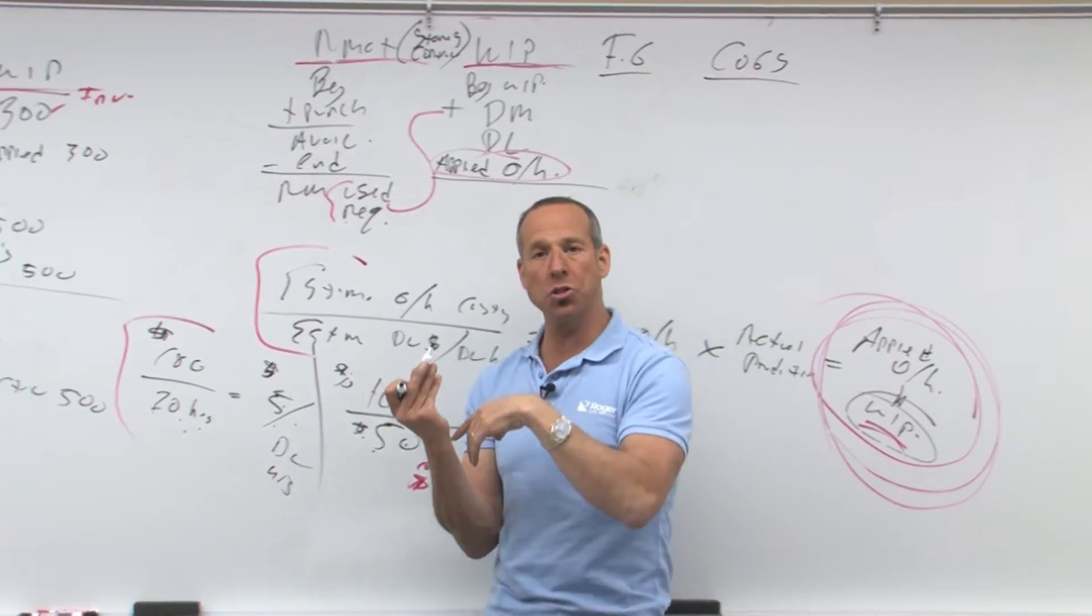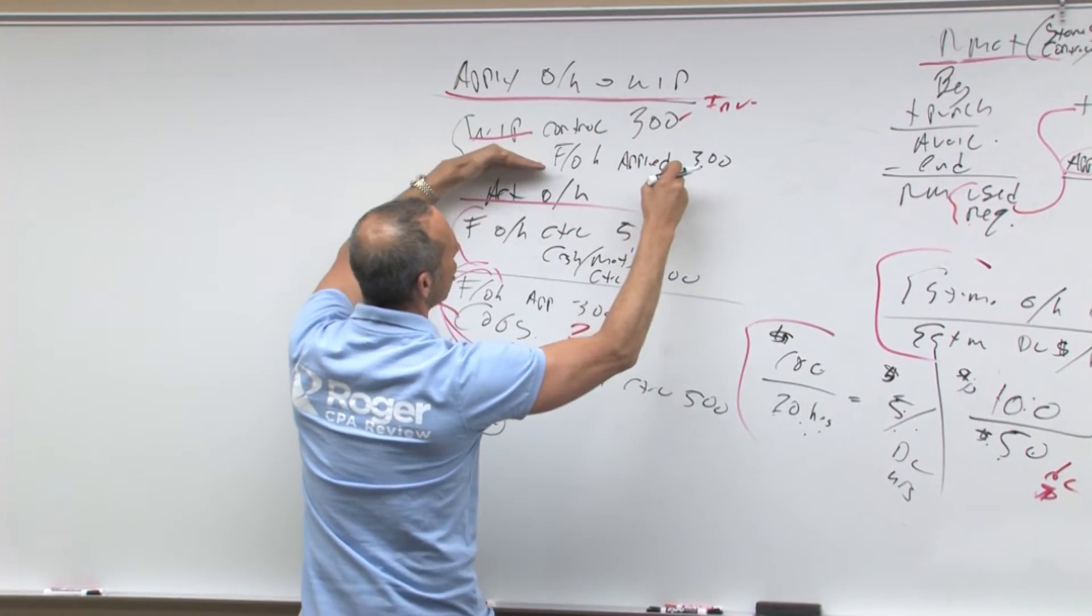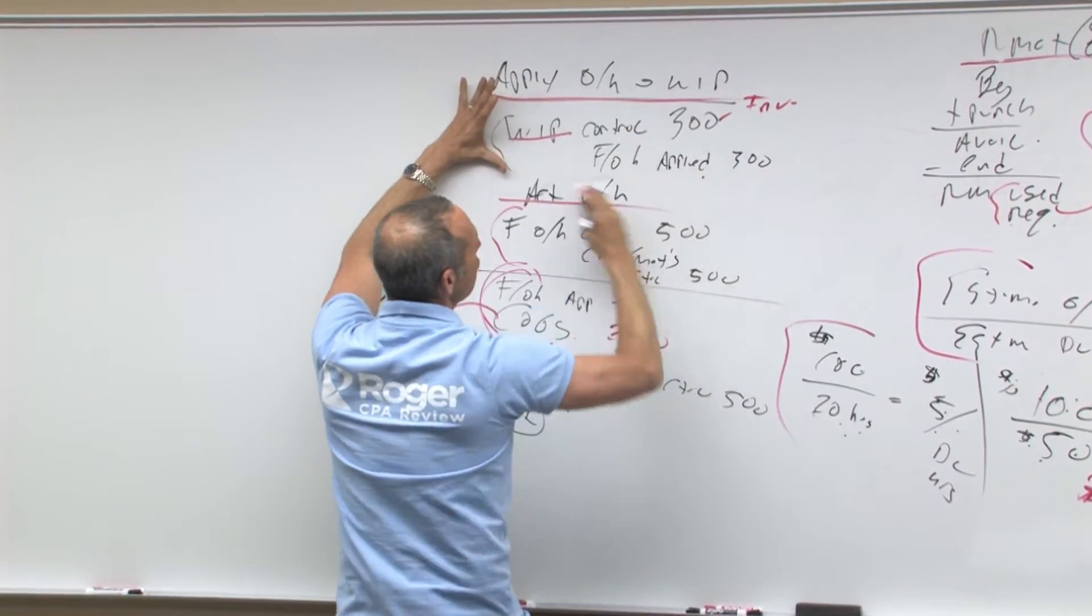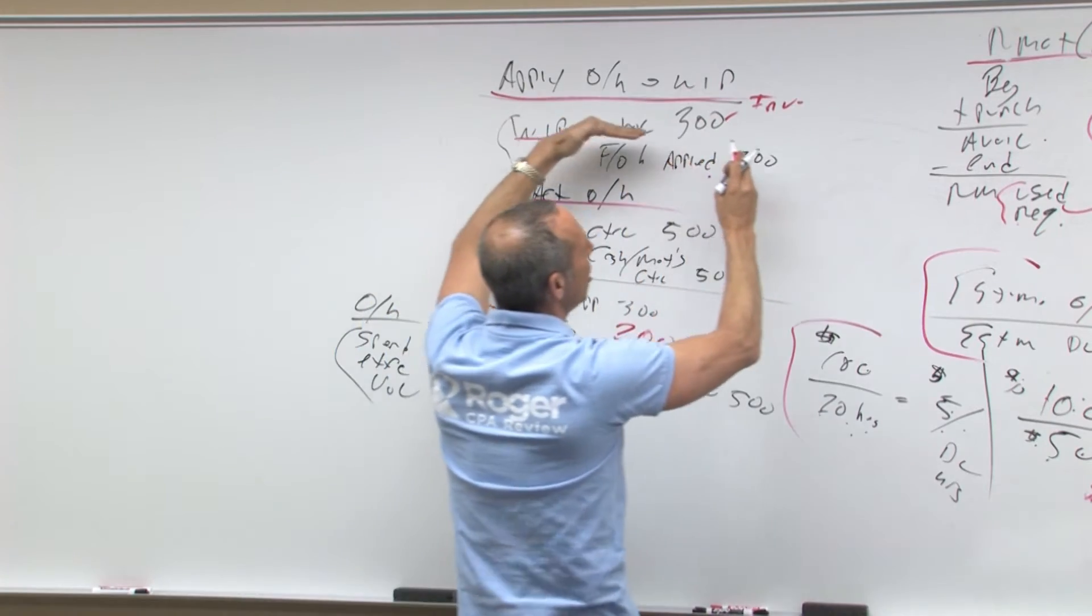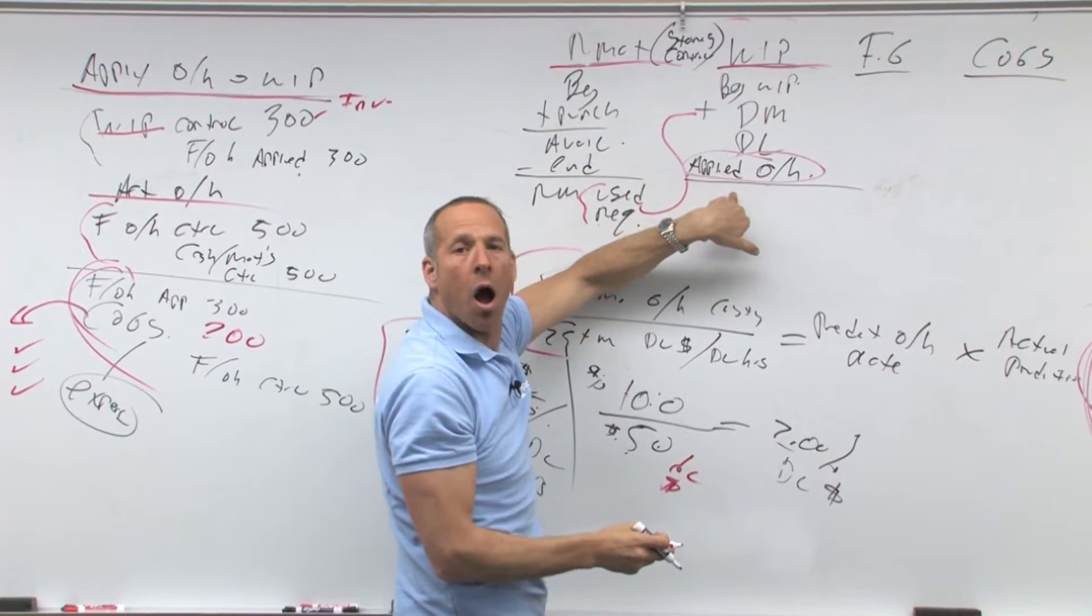Now, come on down. What was the journal entry? We debited work in process, credited overhead applied. This is for the overhead. Where did this debit go? This debit came into WIP right here.